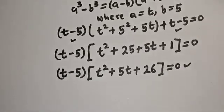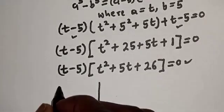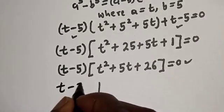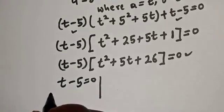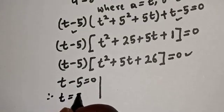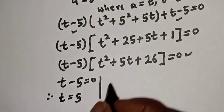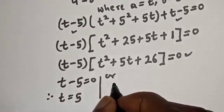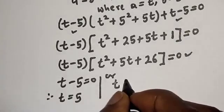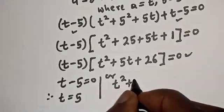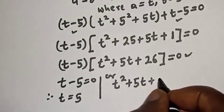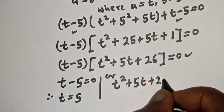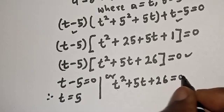There are two cases. The first case is t minus 5 equals zero, therefore t equals 5. The second case is t² plus 5t plus 26 equals zero.